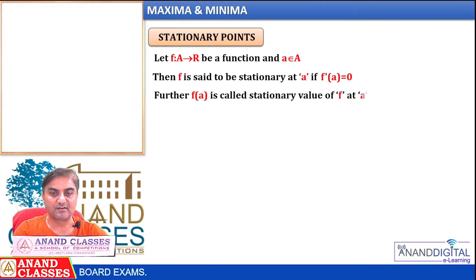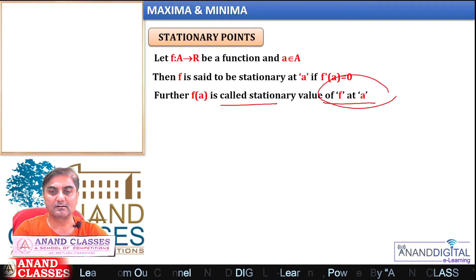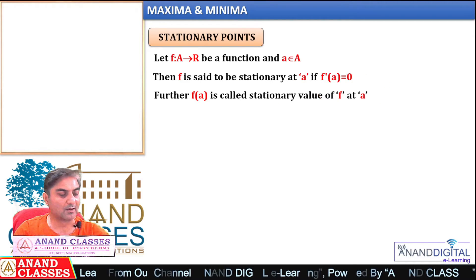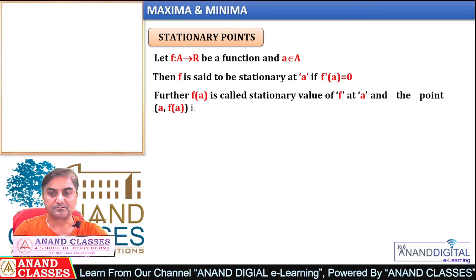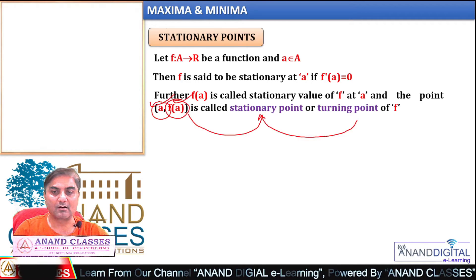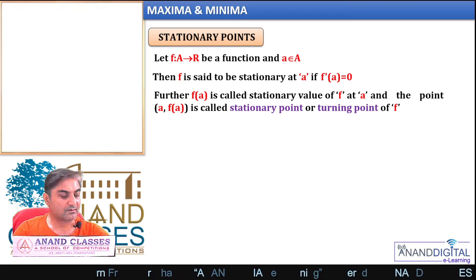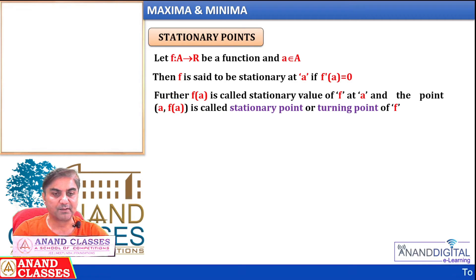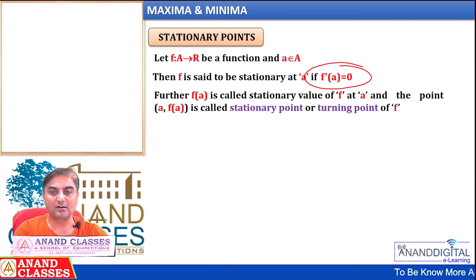Further, f(a) is called the stationary value at point a, and the point (a, f(a)) is called the stationary point and turning point of f. A turning point occurs where the derivative equals 0.